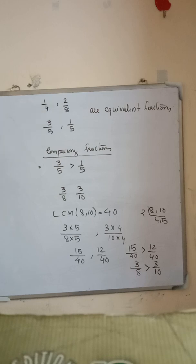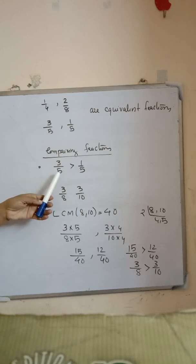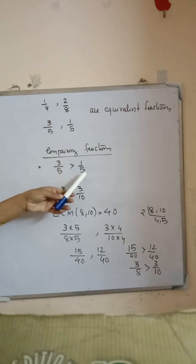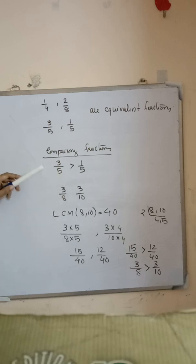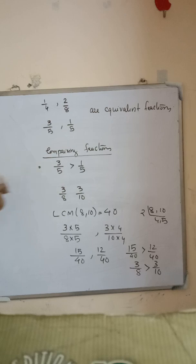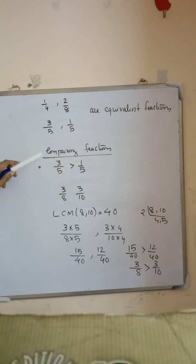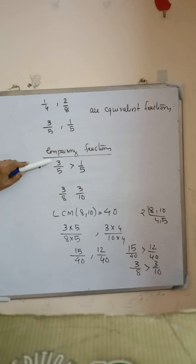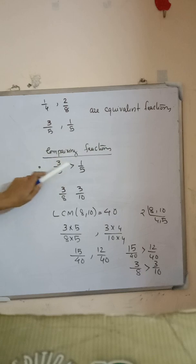How do we compare fractions? Which fraction is greater? If the denominators are equal, it is easy — we simply compare the numerators to find which fraction is greater. For example, 3 by 5 is greater than 1 by 5 because the numerator 3 is greater than 1.